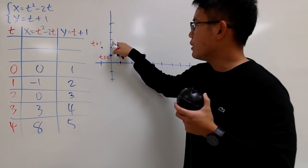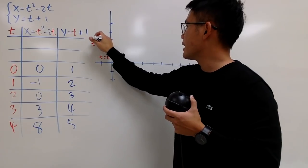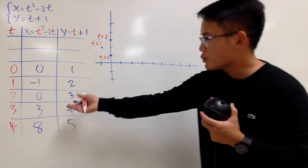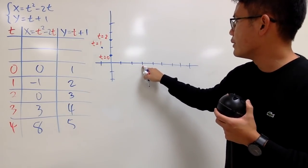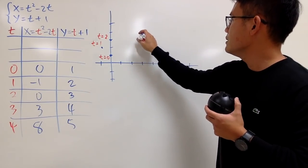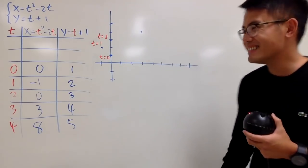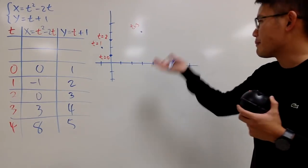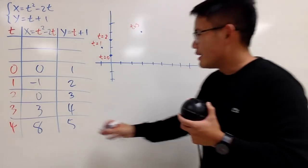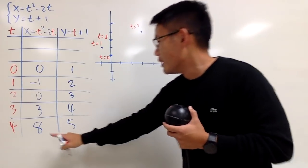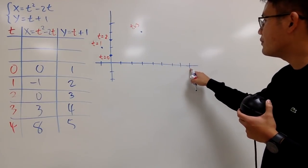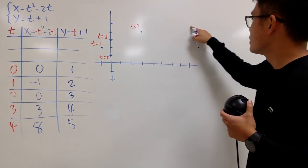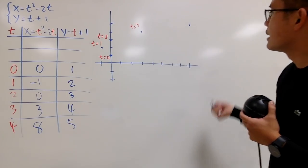We have the point (0, 3) right here — I'll indicate that's when t is 2. Next is (3, 4): go up 1, 2, 3, and over 1, 2, 3, 4 — just like the old days in algebra class. You also have to indicate the time values, since t usually stands for time. The last point at the moment is (8, 5), right here.